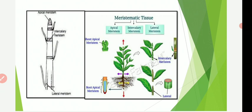Intercalary meristem possesses a very limited ability to divide. It contributes to the development of the primary body and is short-lived, ultimately becoming permanent tissue. Intercalary meristem produces lateral appendages like axillary buds and adventitious buds. It increases the length of internodes and leaves. The nodal regions show presence of intercalary meristem, which is responsible for formation of new branches or new axillary buds.